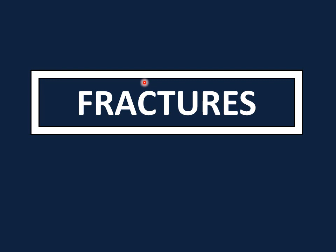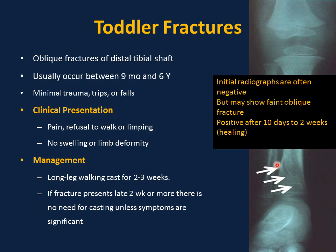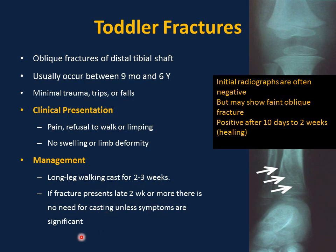Toddler fractures are oblique fractures of the distal tibial shaft, usually occurring between 9 months and 6 years of age after minimal trauma — trips, falls while playing or jumping. Clinical presentation is pain and refusal to walk or limping. Physical examination may appear essentially normal with no swelling, bruising, or limb deformity. Initial radiographs are often negative, but may show a faint oblique or spiral fracture in the distal tibial shaft. If the initial X-ray is negative, repeat in 2 weeks to see the healing process or periosteal reaction. Management is a long leg walking cast for 2 to 3 weeks.